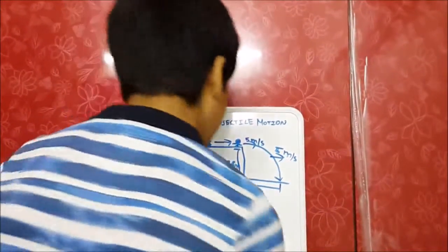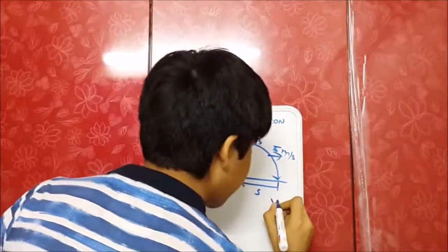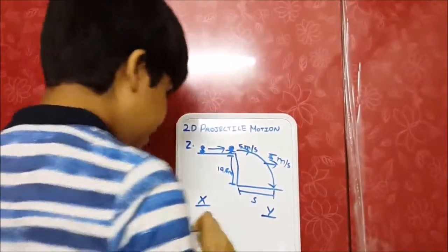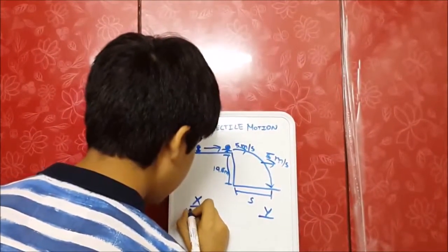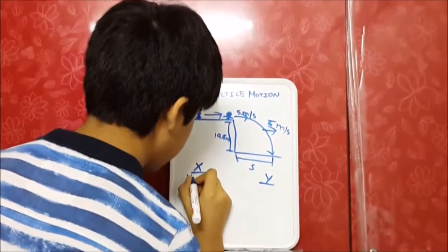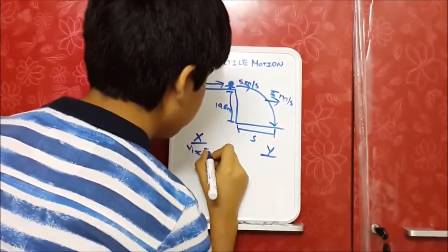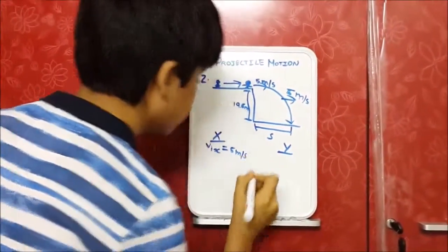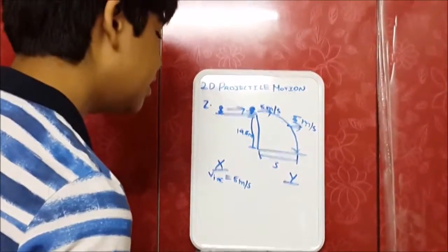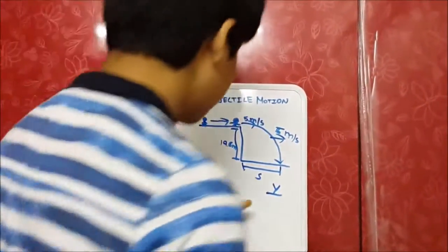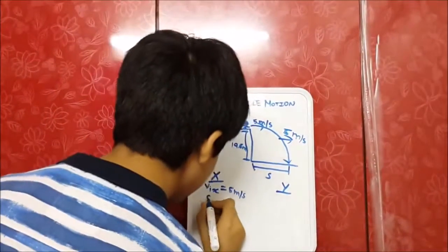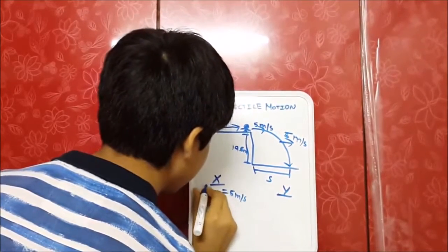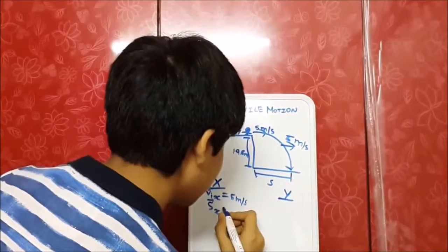So, for this problem, we need to break it into the x-axis and the y-axis. In the x-axis, v initial x is equal to 5 meters per second. And the displacement in the x-axis is unknown.